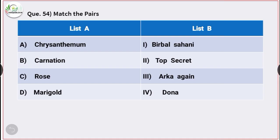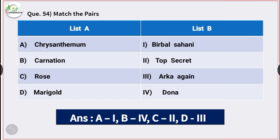Question number 54: Match the following. The variety of chrysanthemum is Birbal Sahni. Variety of carnation is Donna. Variety of rose is Top Secret. And variety of marigold is Arka Agni.